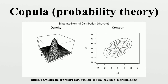In practice, Archimedean copulas are popular because they allow modeling dependence in arbitrarily high dimensions with only one parameter governing the strength of dependence. A copula C is called Archimedean if it admits the representation using a generator function φ that is continuous, strictly decreasing and convex, with a pseudo-inverse. The formula for C yields a copula if and only if φ is d-monotone, meaning it is d-times differentiable with derivatives satisfying the appropriate sign conditions, and is non-increasing and convex.